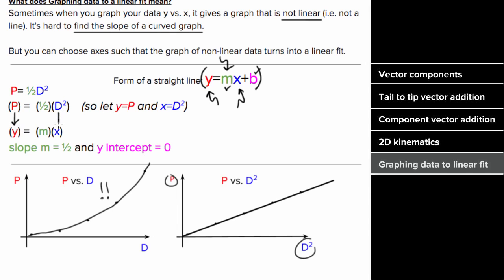With d squared as your horizontal axis, the slope multiplying what you called x is just a constant, meaning your slope will be constant. This lets us predict that if we plot p versus d squared, the slope should be one half — everything multiplying what you called x. If you force your expression into the form of a straight line, you get a linear fit and can predict the slope by looking at the coefficient of your x variable.